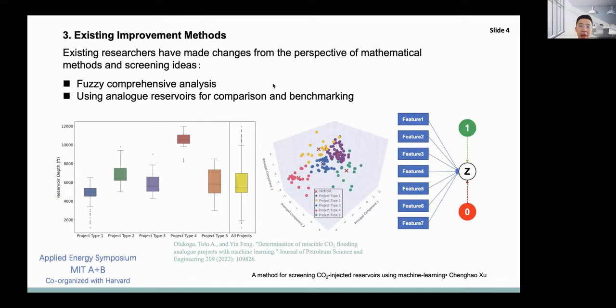Some researchers have been making efforts in different directions for this problem. Most directly, some researchers have combined the method of screening the main control factors and fuzzy evaluation to evaluate the index weight value in response to the problem that the index weight is too subjective. Another person changed the evaluation idea, carried out cluster analysis on the existing reservoirs that were successfully developed by carbon dioxide injection, classified the reservoir and fluid data after the analysis of the main control factors, and compared the reservoir data to be evaluated with several categories of data.